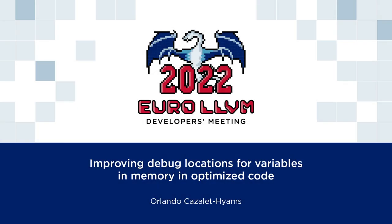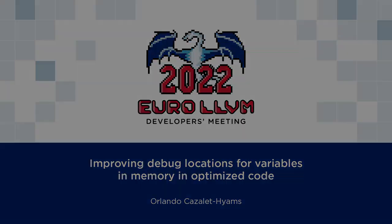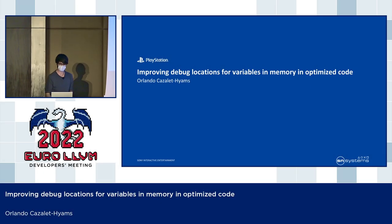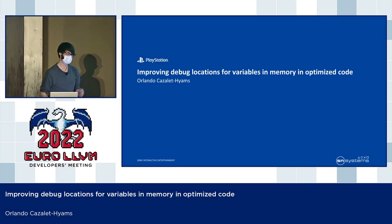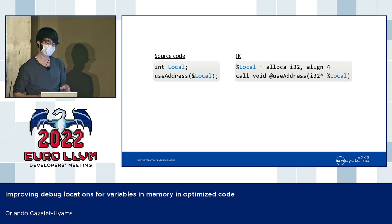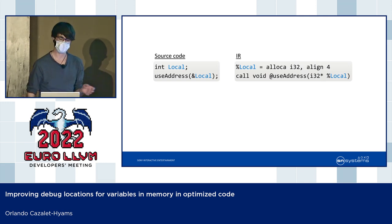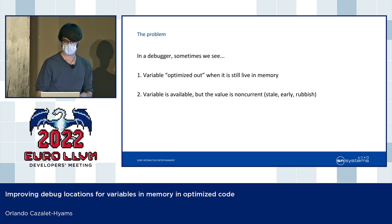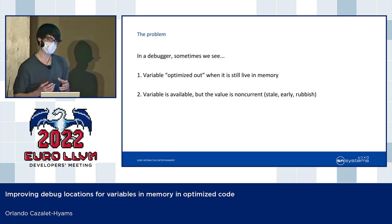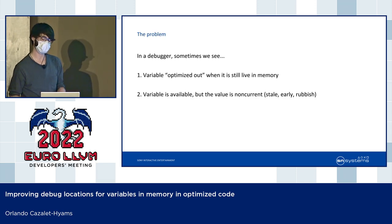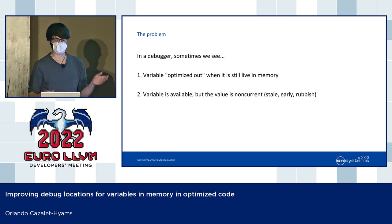Hi, my name's Orlando, and I'm going to be talking to you about improving debug locations for variables in memory in optimized code. I'm specifically talking about local variables whose backing alloc can't be promoted, usually because the address is passed to a function. The result of how LLVM tracks debug locations for these kinds of variables leads to occasionally one of two problems that you see in a debugger.